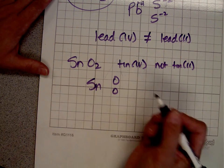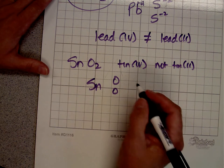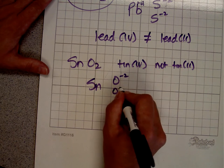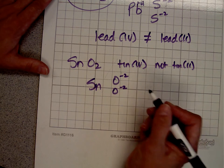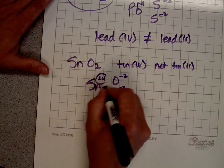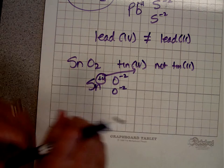We have tin and two oxygens. Givers before takers. Each one of these is going to take two because oxygen takes two, which means it's got to get it from somewhere. Where does it get it from? It gets it from tin. Tin is going to give four. And if tin gives four, you have to reflect that in the name.